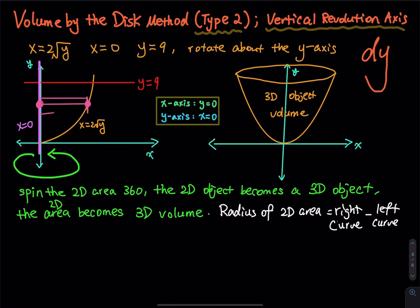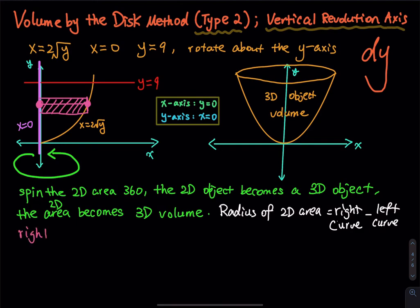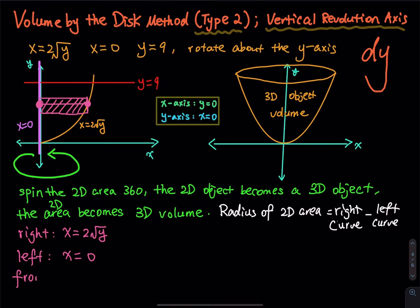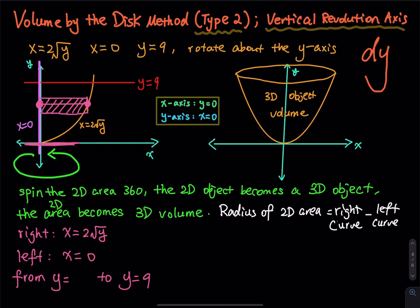The rectangle shows that the right curve is x = 2√y and the left curve is x = 0. Since we are setting up a dy integral, y goes from y = 0 to y = 9. The lower bound y = 0 is the lower cutoff of the bounded region even though it may not be immediately obvious on the picture.